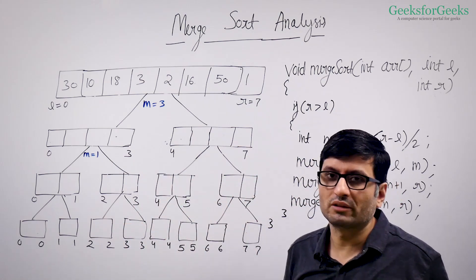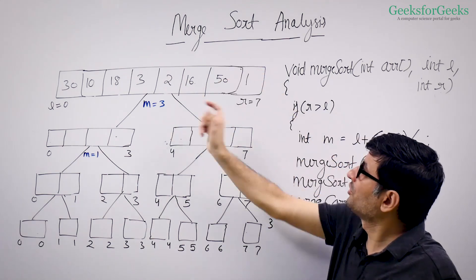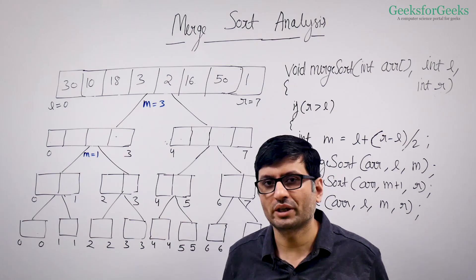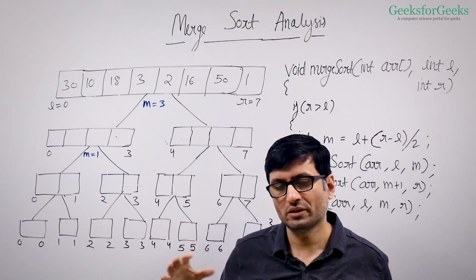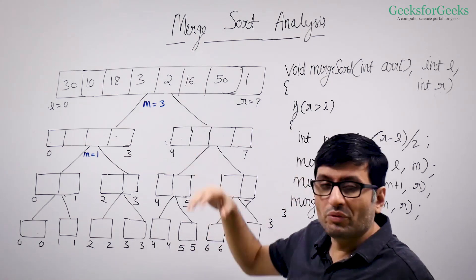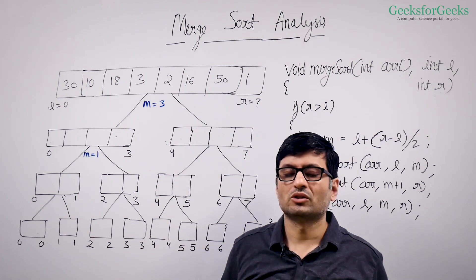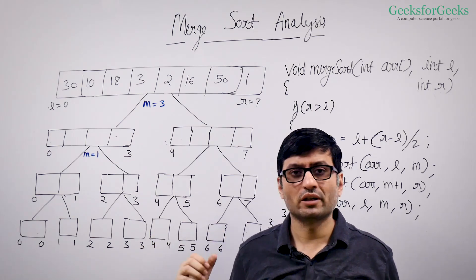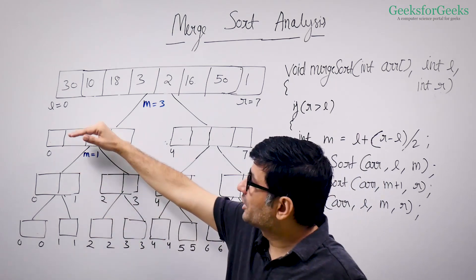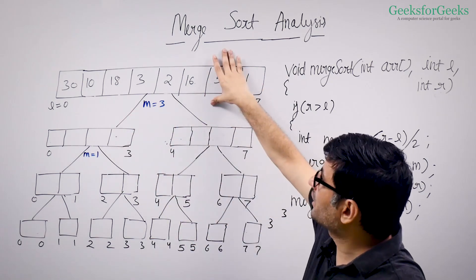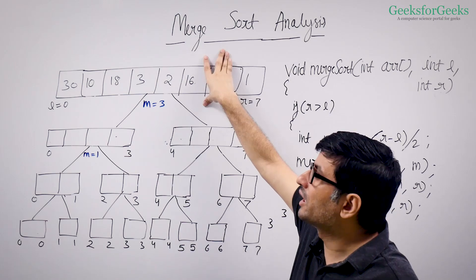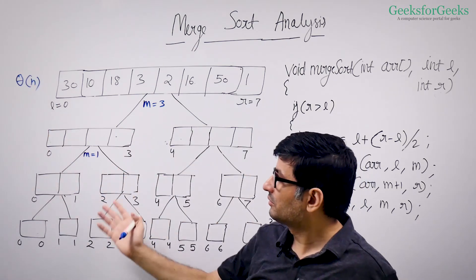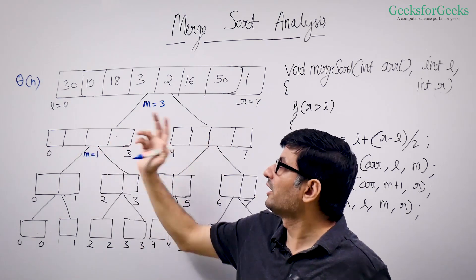Now, how much work are we doing at every level? In the main function call from 0 to 7, or for N elements in general, we recursively call from 0 to N/2, then N/2 plus 1 to N. Then we merge whatever we get from these two recursive calls. The merge process takes theta(N) time if there are N elements to be merged. So the work done at this level, apart from the recursive calls, is theta(N) — merging the two sorted arrays takes theta(N) time.